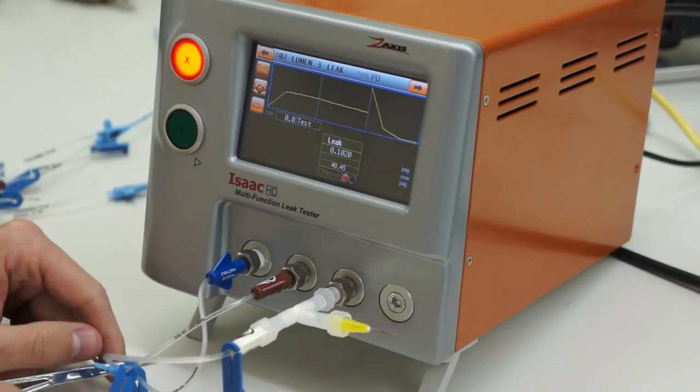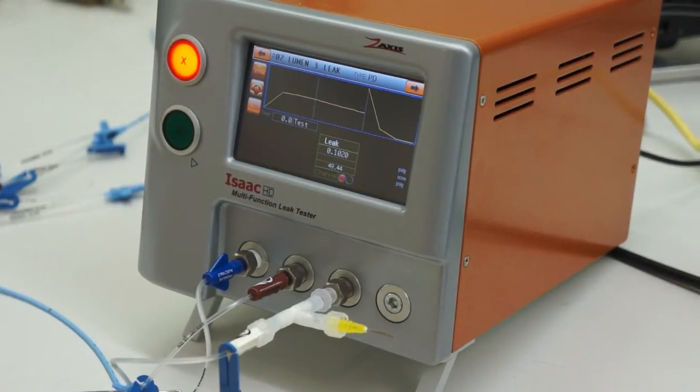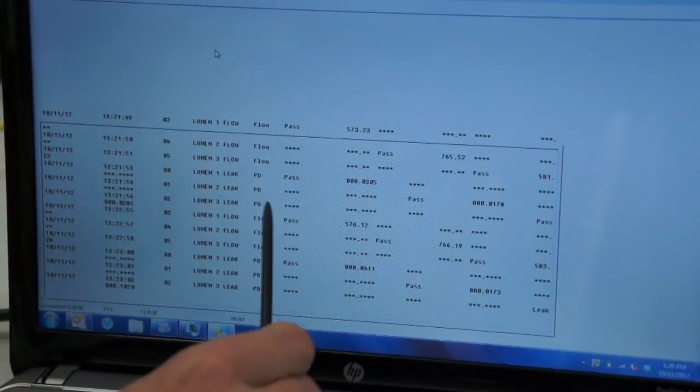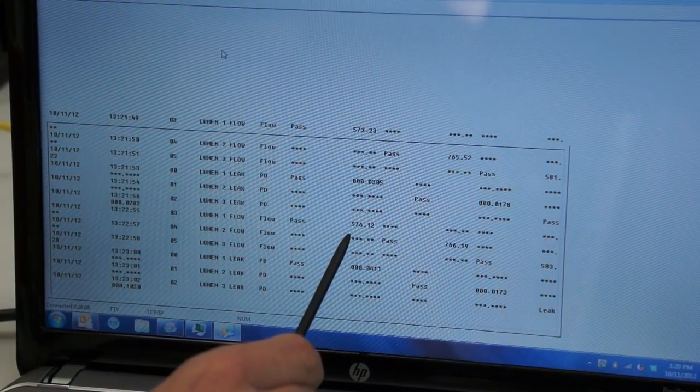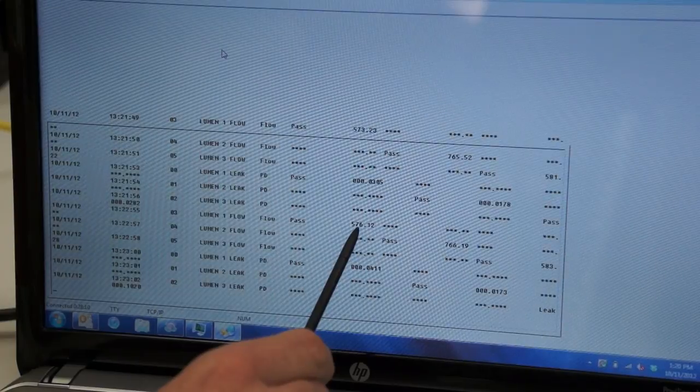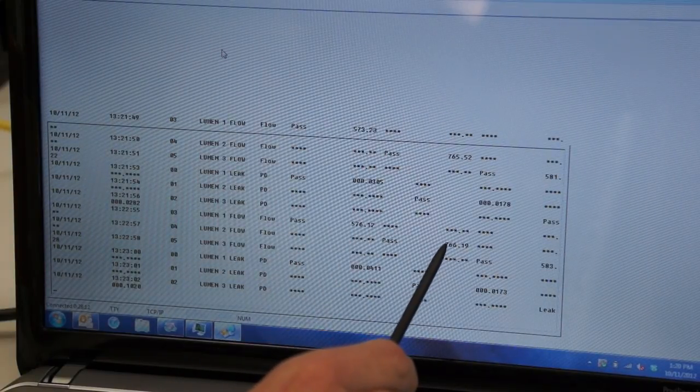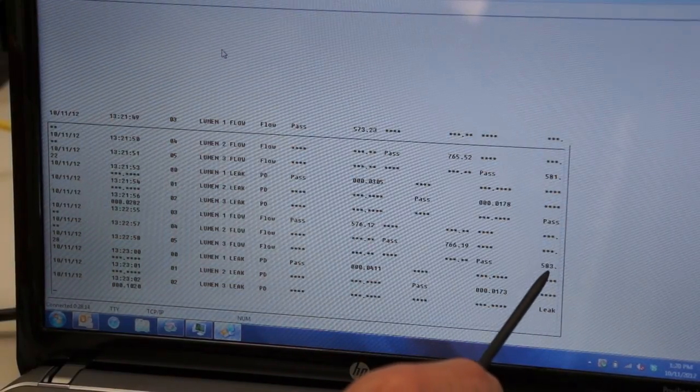We're going to record a failure on channel 3. If we go back over to the computer screen, we'll see that we got 576 on the flow test for lumen 1, 766 for lumen 2, and 583 for lumen 3.